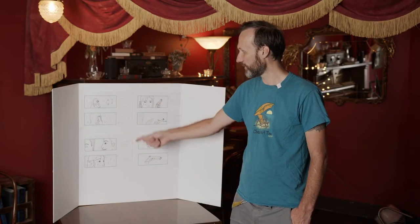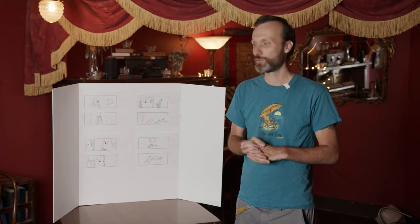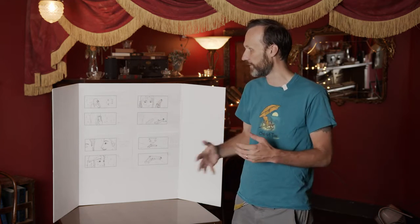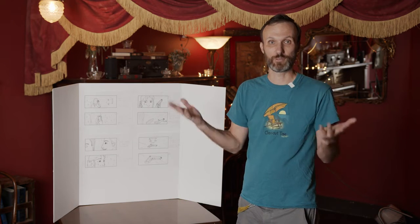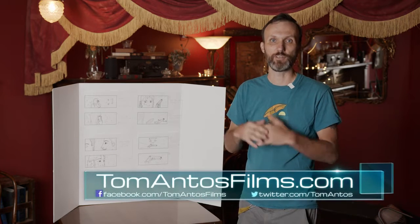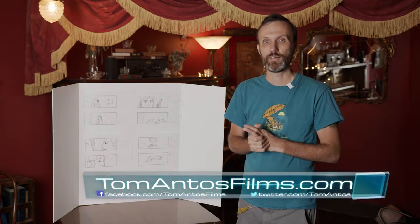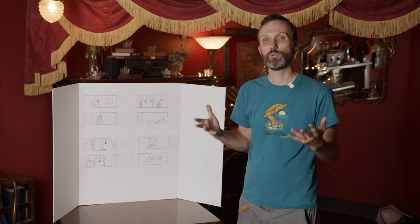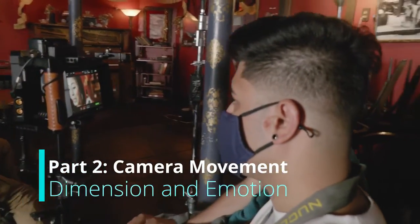Looking at the storyboards, there are a few different shots — over the shoulder, close-ups and things like that. But looking at the location, I think it makes sense to do all of these in one long shot, where the camera moves from a medium shot to a close-up and changes angle. Doing it as one long shot means once we get that shot, we're done with the whole scene, though the initial setup can be more complicated because the lighting is harder to achieve for all the different camera positions. Check out part two where I talk about camera movement and how you can use it to add dimension and emotion to your films.